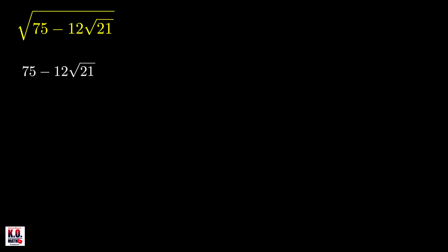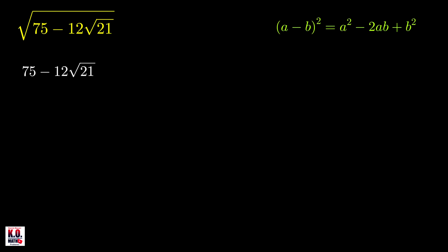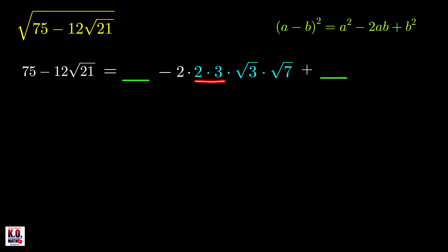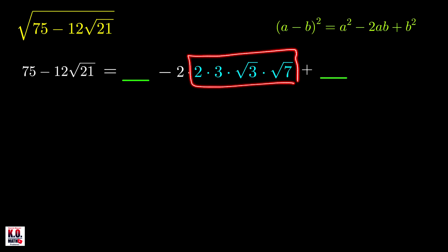Now let's look at the second problem. We look at the radicand 75 minus 12 times the square root of 21. Because of the minus sign, we're going to use the (a − b)² formula instead. We treat negative 12√21 as negative 2ab. We can prime factorize: 12√21 is 2 times 6√21, and further 2 times 3 times √3 times √7. We need to divide this into two factors whose squares sum to 75.